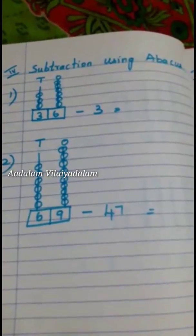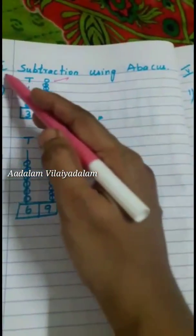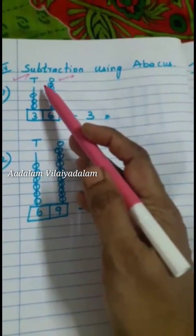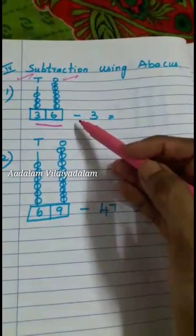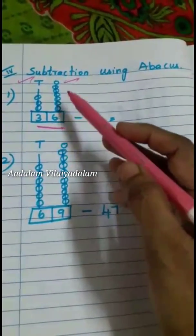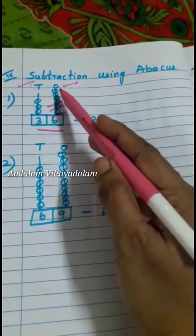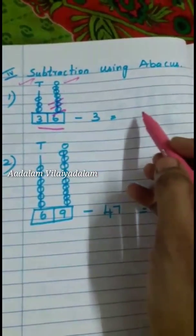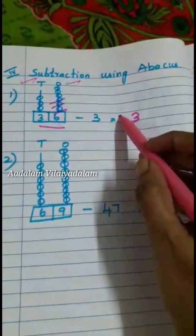Okay, here subtraction using abacus. In an abacus, this is the 1's place and this is the 10's place. So this shows 6 in the 1's place and 3 in the 10's place — altogether 36. We are told to minus 3. Where will you minus? In the 1's place. So cross out 1, 2, 3. What is left over? 1, 2, 3 — so the 1's place is 3. The 10's place is 3. So the answer is 33.